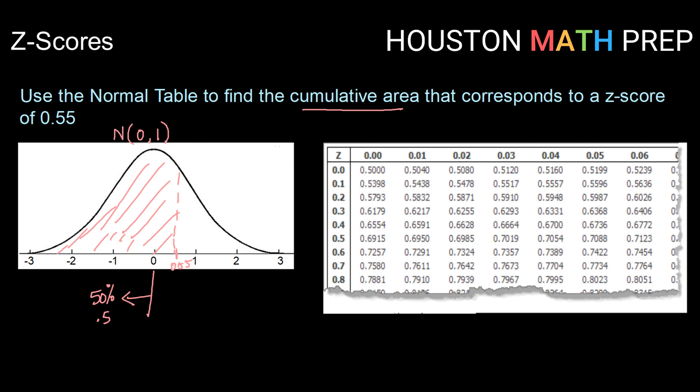So to build a z-score of 0.55, I'm going to go down to 0.5 row, and I'm going to go over to the 0.05 column. I'm then going to look at the intersection of that row and that column, which leads me to 0.7088.